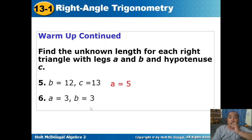For number six, both legs are equal to 3, so we apply the isosceles right triangle theorem. In a 45-45-90 degree triangle, the legs are equal and the length of the hypotenuse is square root of 2 times a leg. So C equals 3 square root of 2.